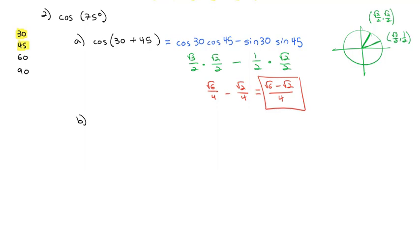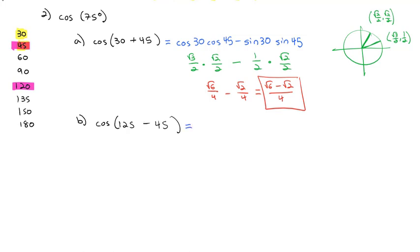We could write 75 as a sum, and we can also write 75 as a difference. Using the angles 30, 45, 60, and 90, we can add a few more: 120, 135, 150, 180 — these are all angles we know values of. And notice that 120 minus 45 equals 75 degrees. So we should be able to use a difference formula to calculate cosine of 75. The difference formula says we take cosine of the first angle times cosine of the second angle plus the sine of the first angle times the sine of the second angle.